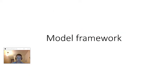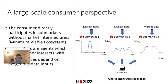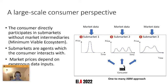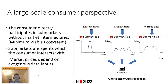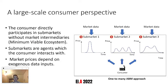So how do we go about implementing that? I want to highlight three main points. The first is that we assume the consumer is directly participating in sub-markets, meaning we're not using market intermediaries such as suppliers or aggregators, which usually have their own strategy and make price signals less transparent between the market and the consumer.